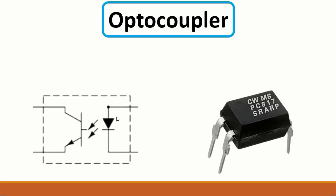The optocoupler has four pins — two on one side and two on the other. Inside it contains two small components: an LED diode and a photo transistor. As you can see, the LED diode is on the input side, and the photo transistor is on the output side.